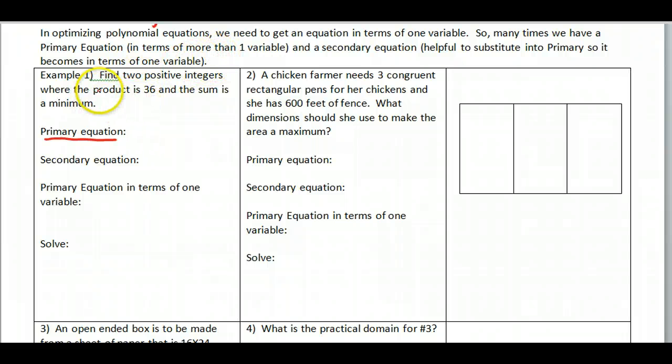So here's a simple example here. Find two positive integers where the product is 36 and the sum is the minimum. So the question for the primary equation is what are we trying to optimize? Well here's the minimum and it says sum. So it's the sum of two numbers. So I'm going to call it x plus y. Now I don't like this in terms of two variables, so I need in terms of one. So I'm going to take a secondary equation that relates these two together.